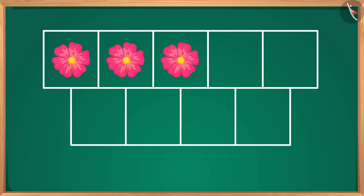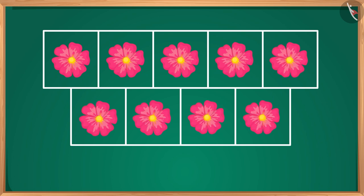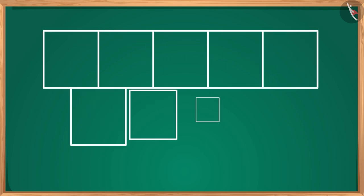One, two, three, four, five, six, and seven. Now in all our nine frames there is a flower. This means if we add two and seven we will get nine.